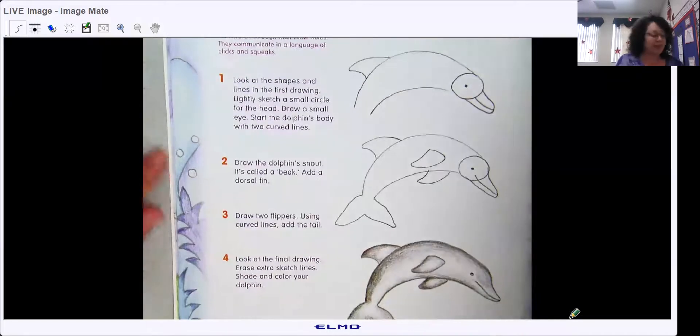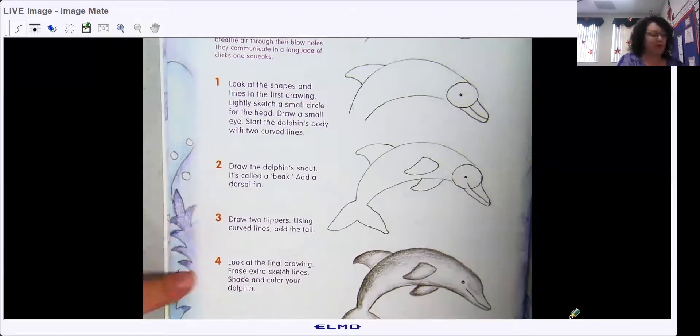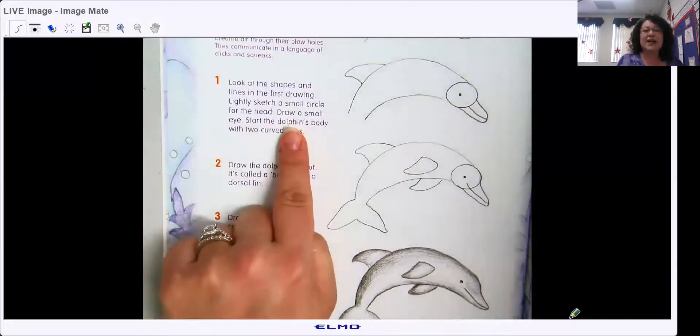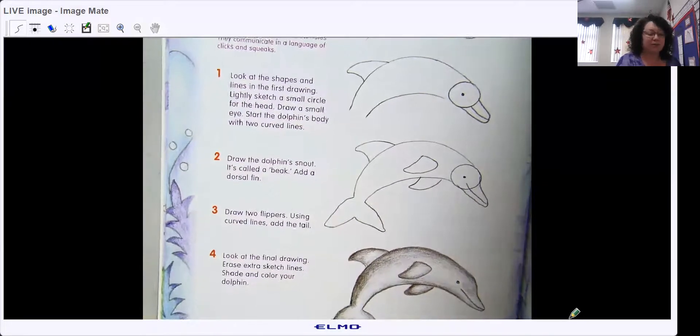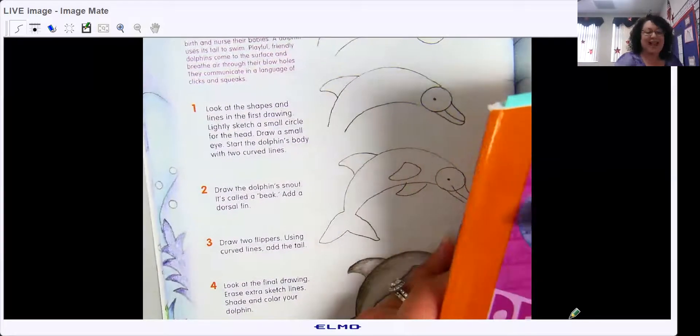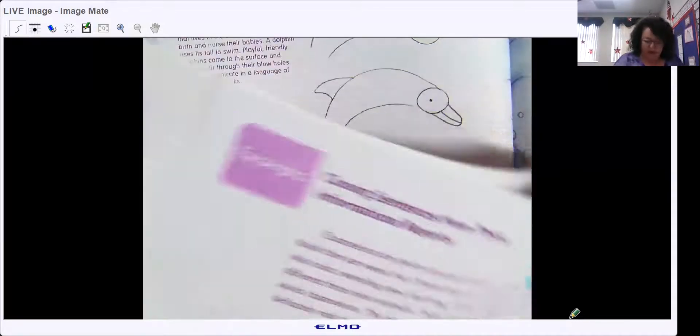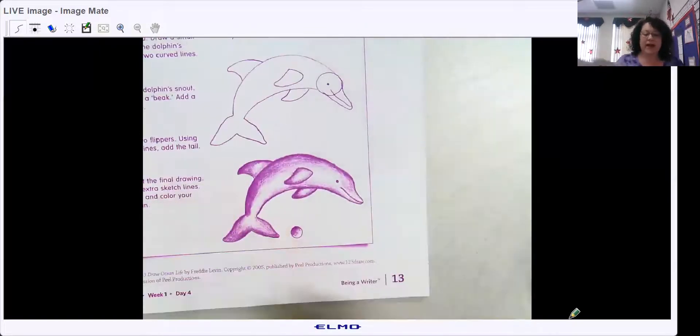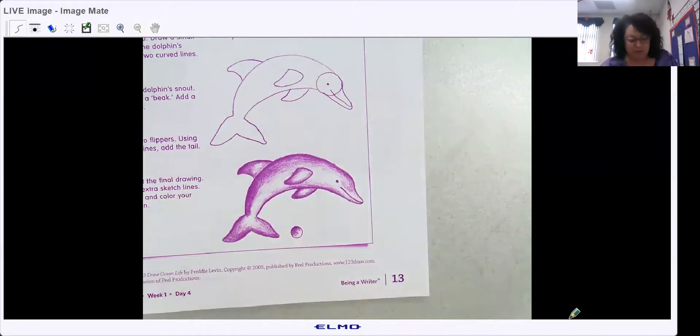So this functional text is step-by-step instructions on how to draw a dolphin. One way that it's organized, it's organized by step number. So step number one, it tells us exactly what to do. So your Being a Writer book has the same page, page 13. If you can't find that book it's okay because we're going to draw this together.